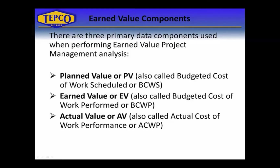There are three primary components in Earned Value Project Management. The first one being Planned Value or PV, also referred to as Budgeted Cost of Work Scheduled or BCWS. The second is Earned Value or EV, also called Budgeted Cost of Work Performed or BCWP. And the third one is Actual Value or AV, also referred to as Actual Cost of Work Performed or ACWP.